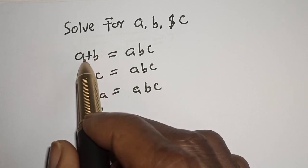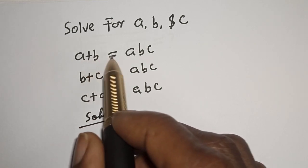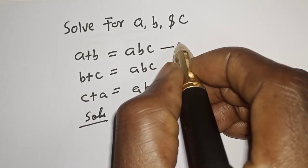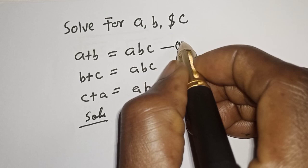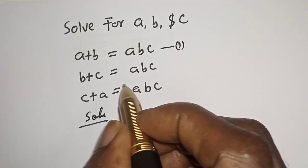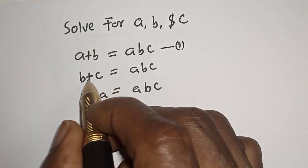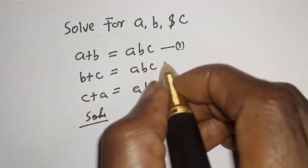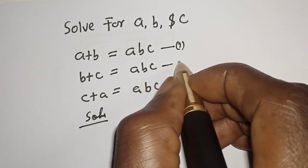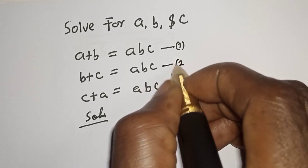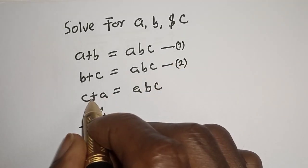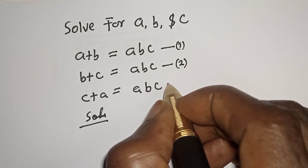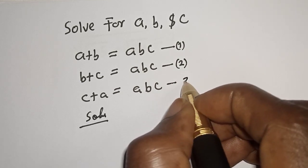If you look at this: a plus b is equal to abc — let's call this equation one. b plus c is equal to abc — let's call this equation two. And c plus a is equal to abc — let's call this equation three.